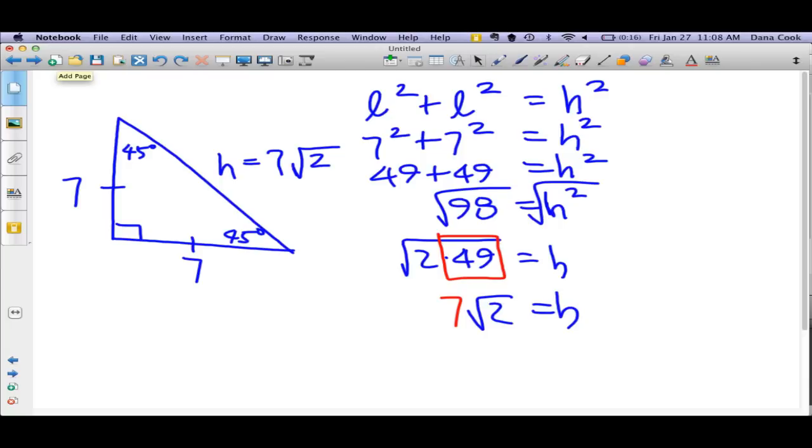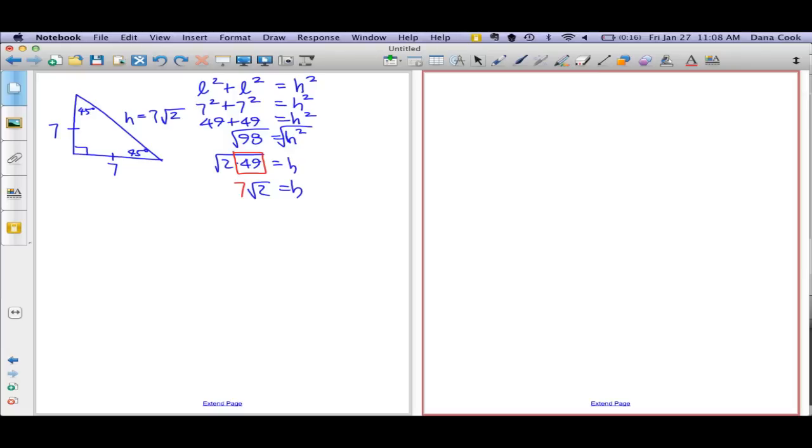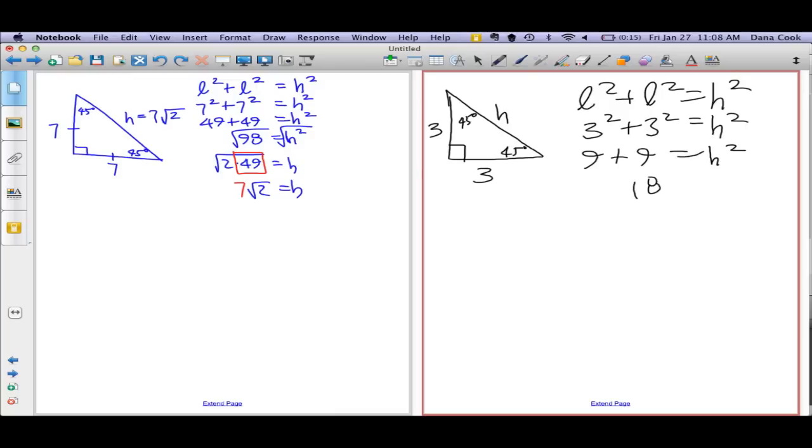Now, keeping that in mind, let's look at another right triangle. Another 45, 45, 90 triangle, but in this case, I tell you that this is three, this is three, and I want to calculate the hypotenuse. Three squared plus three squared equals hypotenuse squared. Nine plus nine equals hypotenuse squared. Eighteen equals hypotenuse squared. Square root of both sides, the square root of two times nine, which is three times the square root of two.